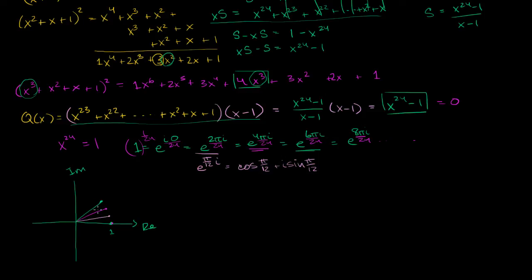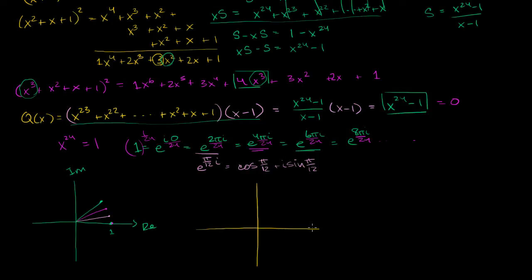We care about the imaginary parts of their squares. We can draw a unit circle and divide it into 24 sections. All roots have magnitude 1. We're going to have 24 roots distributed around it — four quadrants with six roots in each section: at angles 1, pi over 12, 2 pi over 12, pi over 4, and their symmetric counterparts, up through pi over 2.